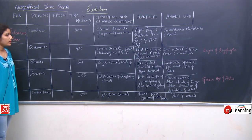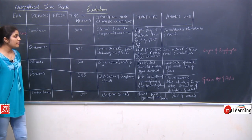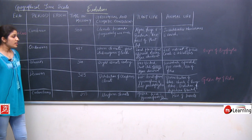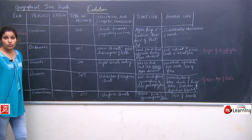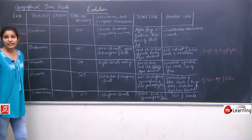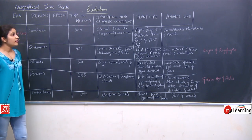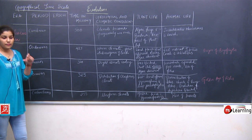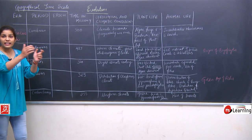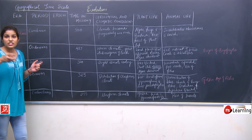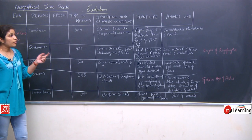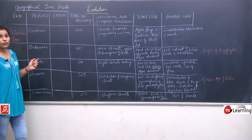The Silurian period was around 360 million years ago. The climatic conditions were somewhat cooler than the Ordovician period, because most of the land was submerged in water. The first known land plant club appeared in the Silurian period of the Paleozoic era — a club of terrestrial plants known as mosses — and algae were dominant.